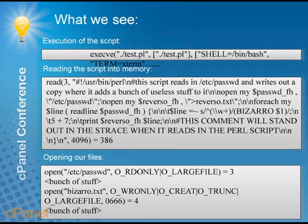You'll see it actually executing the script — that's the execv command — and after that is the environment it runs in. After that, you're going to see reading the script into memory. You'll see a read and then parentheses and the number three. That three is just a file descriptor put in there by strace to keep track of opens and closes of files. Every file that opens will have a number after it, so if you see a write to that number later, you know it's writing to that particular file. Here you can see it's opening /etc/passwd, which equals three, and opening our bizarro.txt, which equals four.